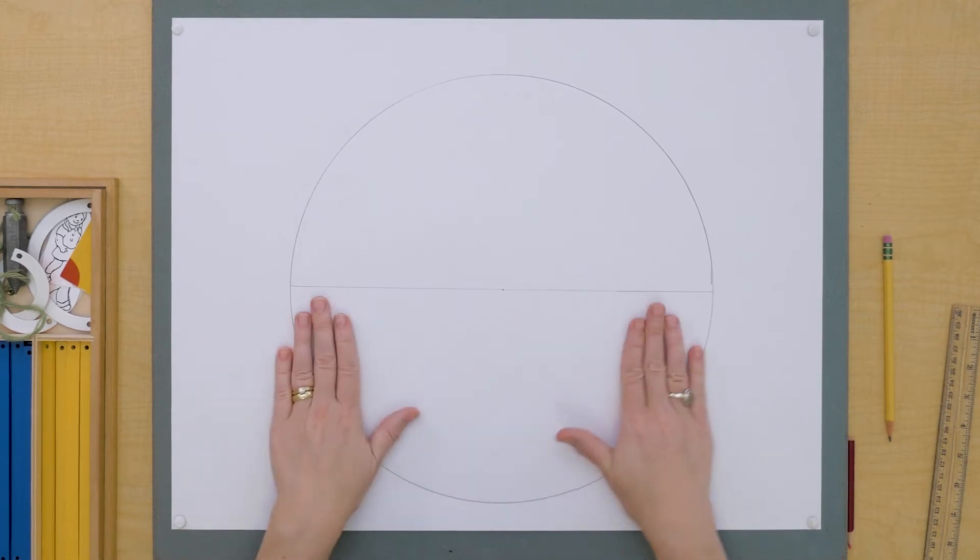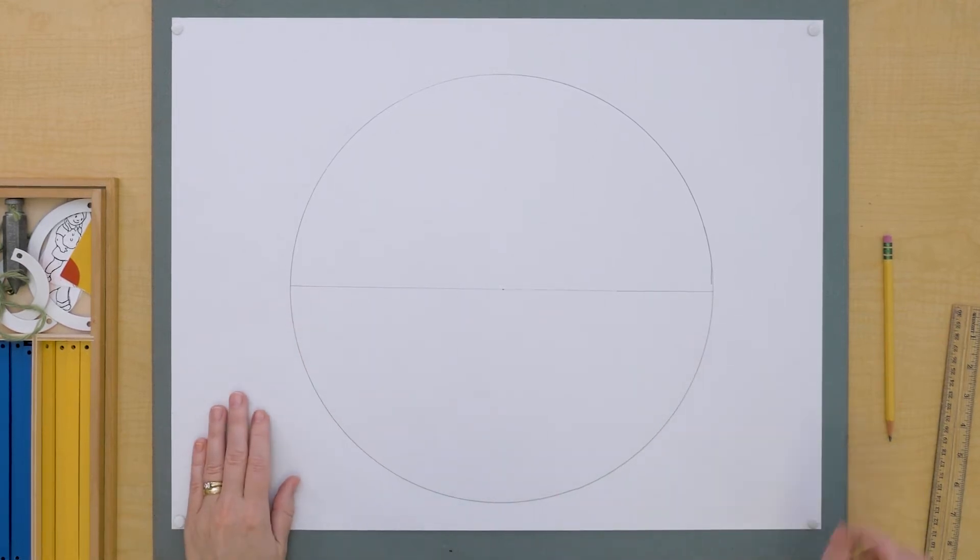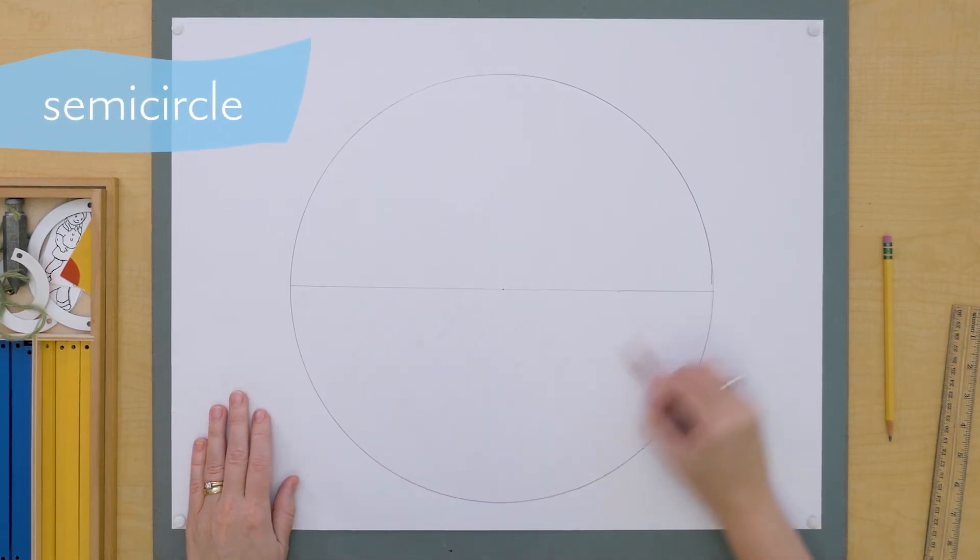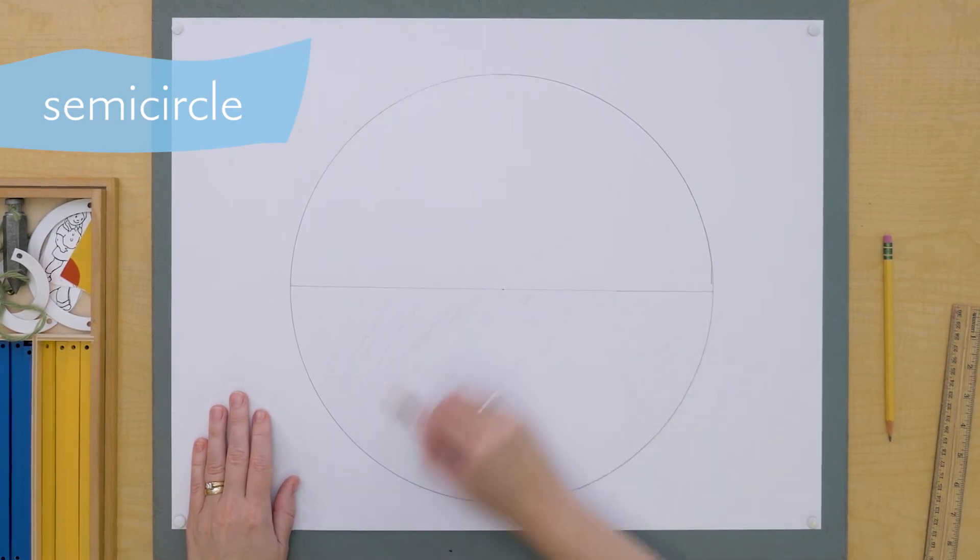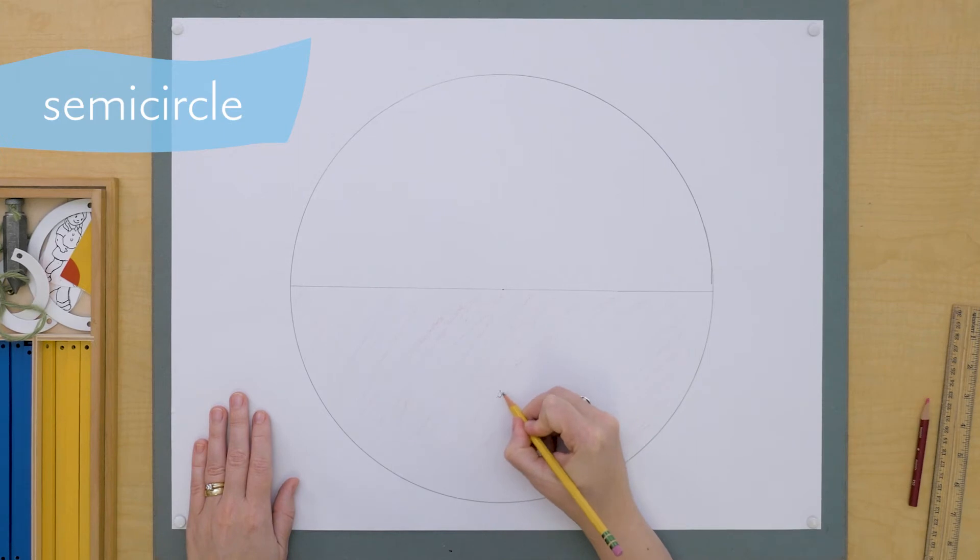And so we call half of a circle, this whole space, one whole half here like this. We can call this a semicircle. This is our semicircle.